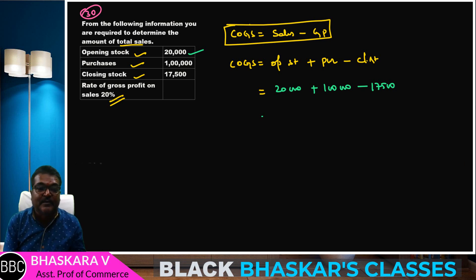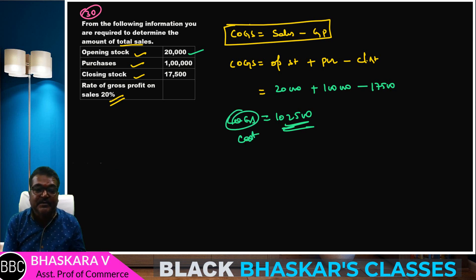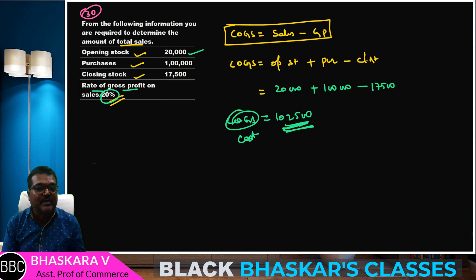So the result comes to 1,02,500. Therefore cost of goods sold is 1,02,500. Now GP ratio given is 20%.